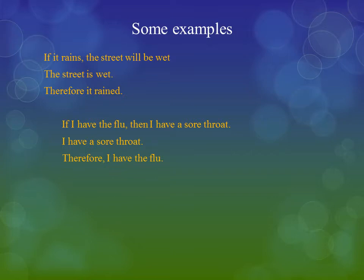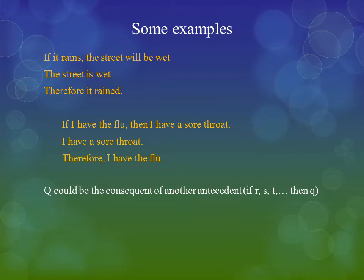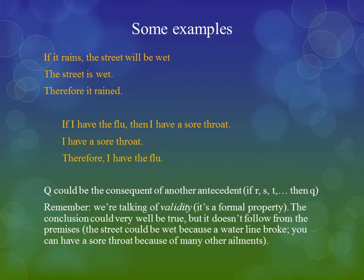Or: If I have the flu, then I have a sore throat. And I have a sore throat. Therefore, I have the flu. As you can see, the consequent in both cases — the street is wet, or I have a sore throat — could very well be the consequence of another antecedent. The street is wet because of R, S, or T. I have a sore throat because of R, S, or T — not necessarily just because I have the flu or because it rained. Remember, we are talking about validity — it is a formal property. The conclusion could very well be true, but the point is that it does not follow from the premises. The street could be wet because the water line broke, or you can have a sore throat for many other reasons.